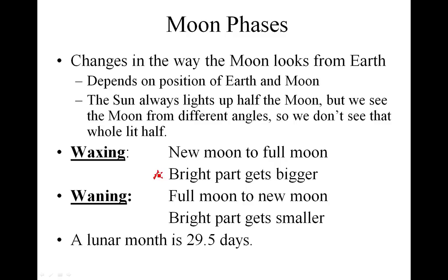So if you go outside tonight and look at the moon, then go outside tomorrow night and it's bigger, it means the moon is waxing. Waning is the opposite — it's full moon to new moon, and the bright part gets smaller. So if you go out tonight and look at the moon, then go out tomorrow night and see that the moon is smaller, it's waning.